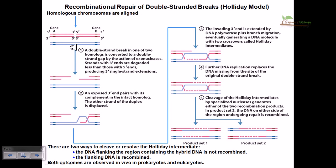A double-stranded break in one of the two homologs is converted to a double-stranded gap with the help of an exonuclease activity. Three prime ends are degraded less, and five prime ends are degraded in a higher amount. So remember, this is the five prime here.